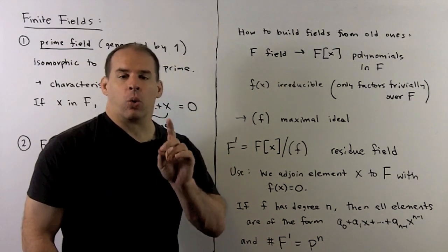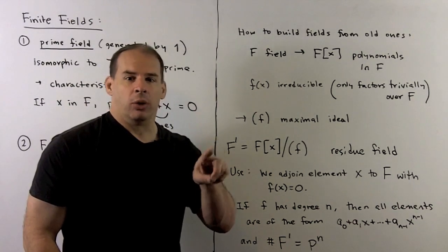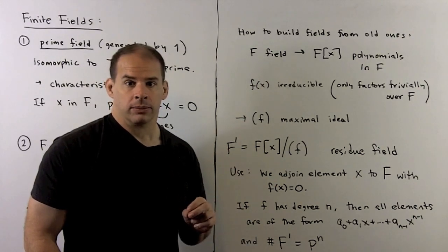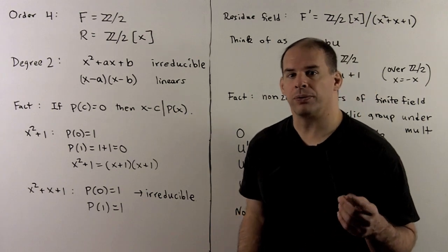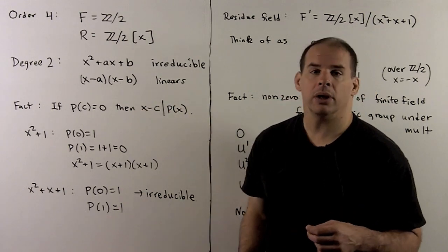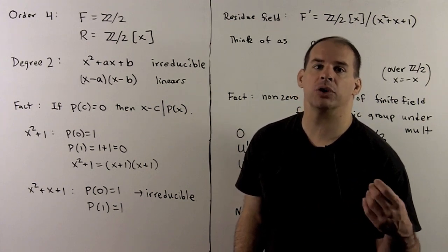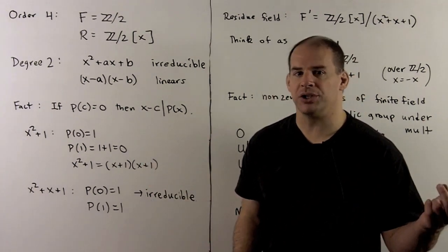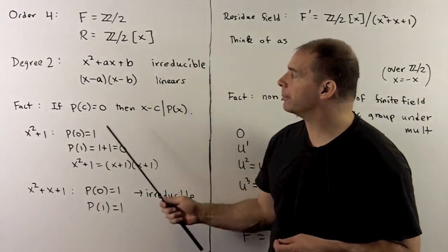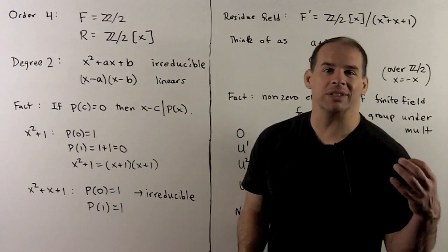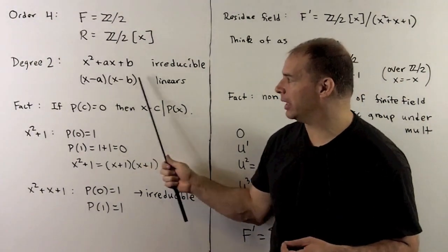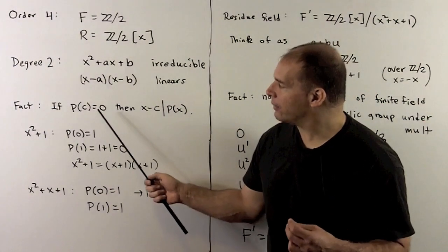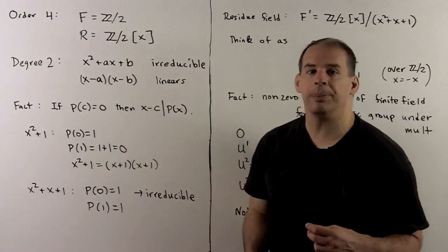So to get finite fields of order 4 and 8, we look at polynomials over Z mod 2 and find irreducible polynomials of degree 2 and degree 3. To get a field of order 4, with prime field Z mod 2, we need an irreducible polynomial with coefficients in Z mod 2 of degree 2. For monic degree-2 polynomials over a field, only two things can happen: either they're irreducible, or they factor into linear factors. There's an easy test for linear factors.